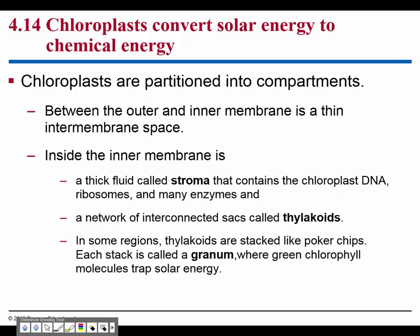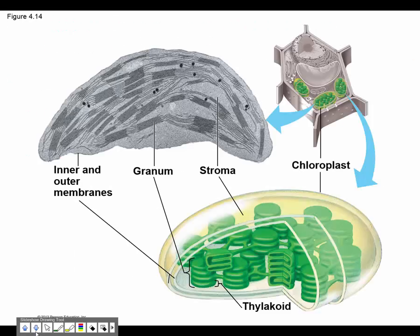The stroma fluid contains the chloroplast DNA, so chloroplasts have their own DNA just like mitochondria do. You also have a network of interconnected sacs called thylakoids, which are stacked kind of like poker chips — those stacks are called grana. Each individual one is a thylakoid, and the whole structure is the chloroplast. So remember: stroma is the thick fluid, grana are the stacks of thylakoids.